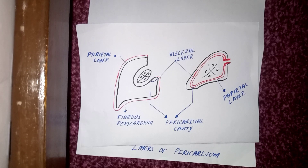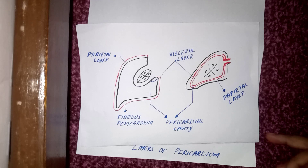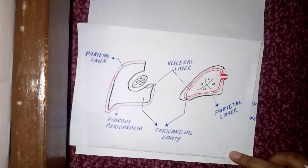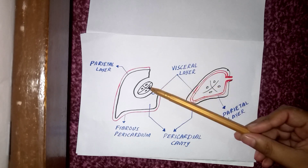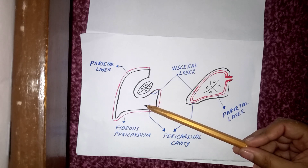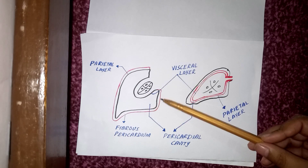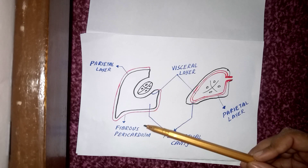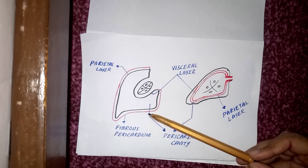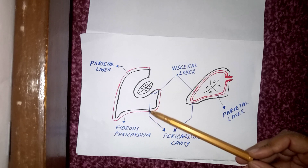The serous pericardium is a thin double-layered serous membrane, unlike the fibrous pericardium. It is lined by mesothelium. In this diagram you can see the heart musculature, outside which we have the serous pericardium, and with the red marker, the fibrous pericardium.